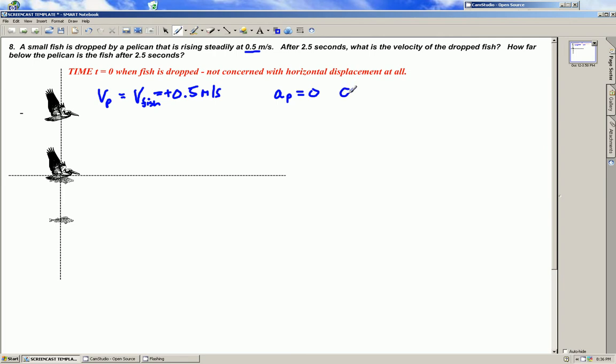However the acceleration of the fish at time t equals zero, subscript f, is equal to negative 9.8 meters per second squared at the instant that the fish is dropped.